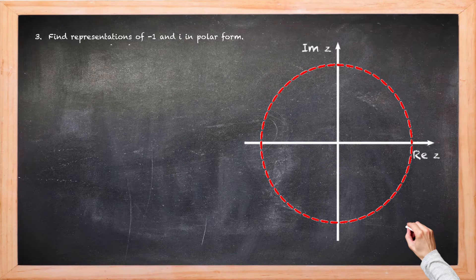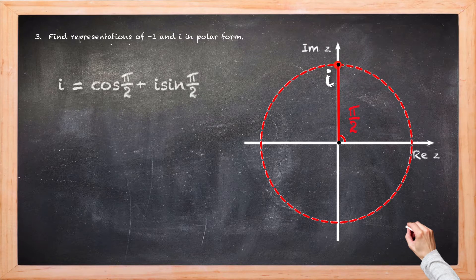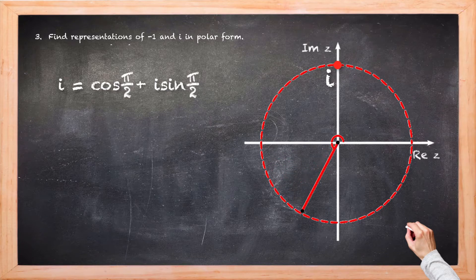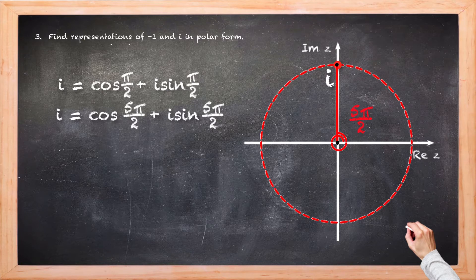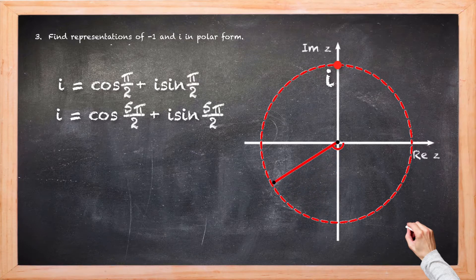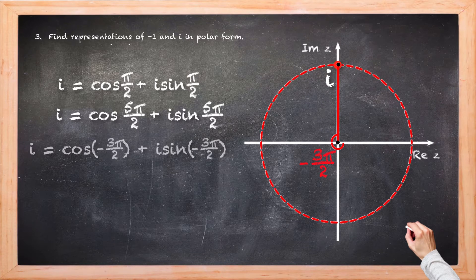Moving on to complex number i: there's a rotation of π/2, so argument π/2. It lies on the unit circle, giving polar form cos(π/2) plus i sin(π/2). Another complete turn adds another 4 lots of π/2 to give 5π/2, with polar form cos(5π/2) plus i sin(5π/2). A negative rotation of 3 lots of π/2 gives argument -3π/2, with polar form cos(-3π/2) plus i sin(-3π/2).